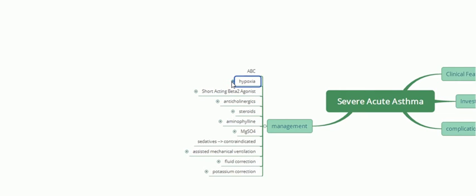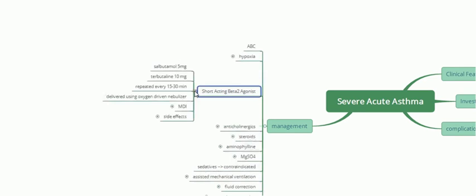After ABC and correcting hypoxia, we move to drugs. The first drugs are steroids and short-acting beta-2 agonists (SABA). Steroids take longer to act, so they are started together with SABA. Examples of SABA are salbutamol, given at 5 mg, and terbutaline, given at 10 mg — double the dose of salbutamol.